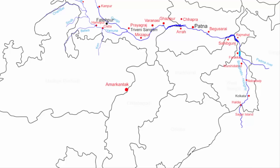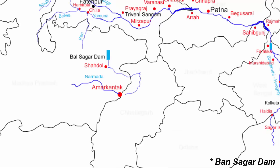The Son river originates near Amarkantak at the Madhya Pradesh and Chhattisgarh border, on the eastern side of where the Narmada river originates. Son initially flows 40 kilometers north in Chhattisgarh, then enters Madhya Pradesh flowing northwest towards the district of Shahdol. Here the Son river becomes the source of the Bansagar Dam — a multipurpose river valley project. The river then flows northeast, and about 20 kilometers from the Bansagar Dam the Banas river joins the Son.